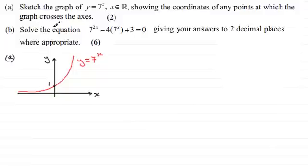Now in part b we're asked to solve the equation 7 to the power 2x minus 4 times 7 to the power x plus 3 equals 0. Giving your answers to two decimal places where appropriate for six marks. So again if you'd like to have a go at this and haven't done so already just give you a few moments to pause the video.